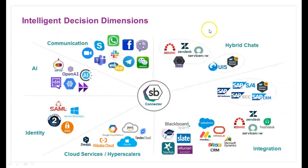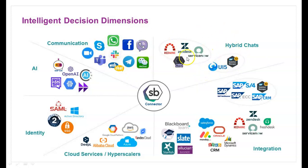Looking at intelligent decision dimensions, there are many options available in SAP AI. On the right side we can see the various SAP software that can be integrated. This includes communication through social networking sites, hybrid chats, various chat tools, OpenAI integration, cloud server hyperscalers, and various other software. These are all possible within the intelligent decision dimension, and the sessions will focus on the AI part in detail.